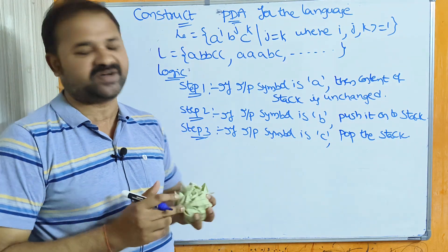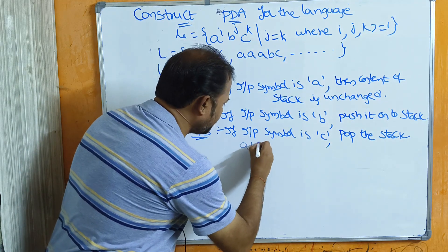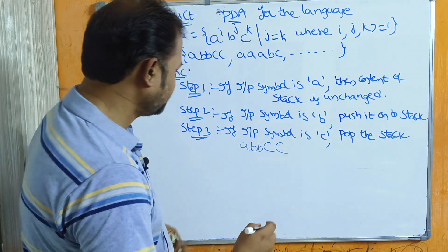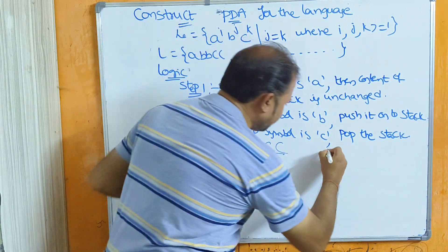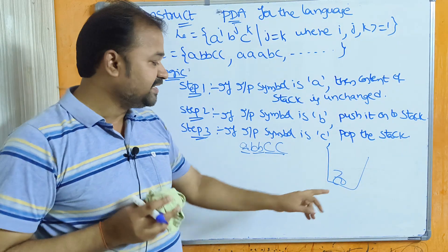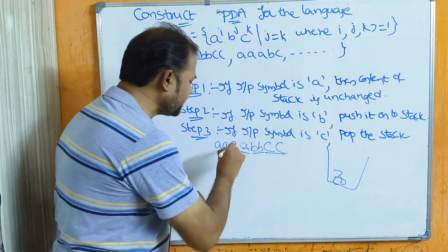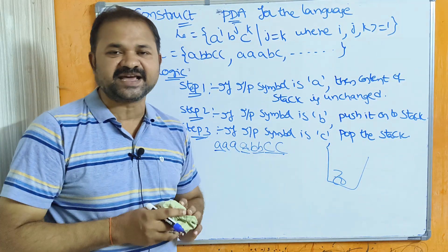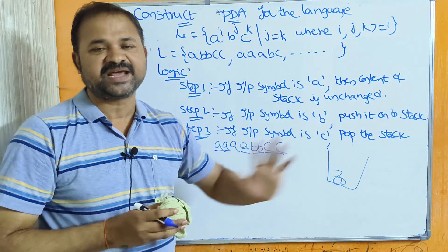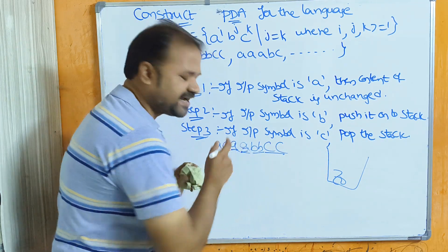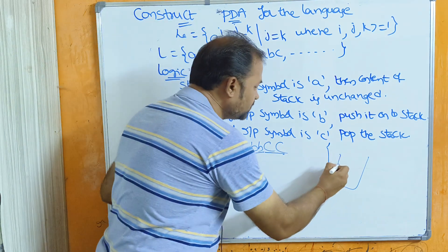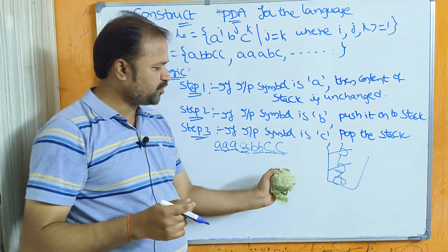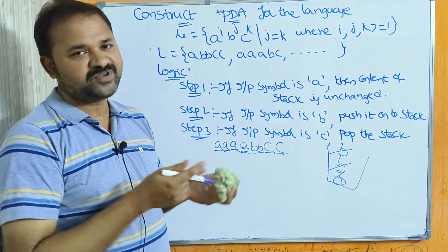Because the number of b's and c's must be equal. If we take a string like a, bb, a, bb, cc — here the number of b's and c's are the same. Initially the stack contains z0. For each a, the stack content is unchanged. Then for each b we push, and for each c we pop. After processing, we will reach the final state with an empty stack, so our logic is correct.